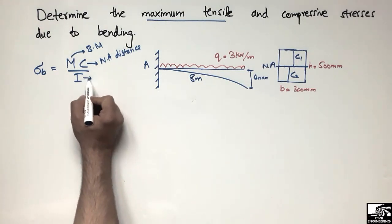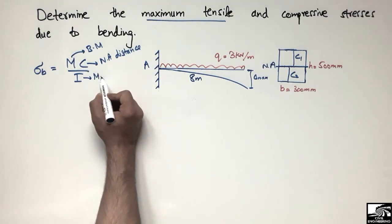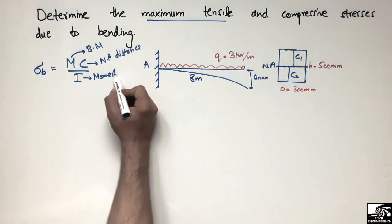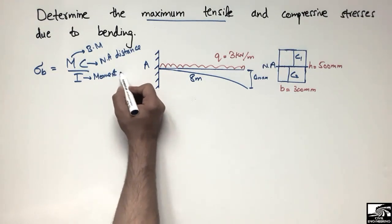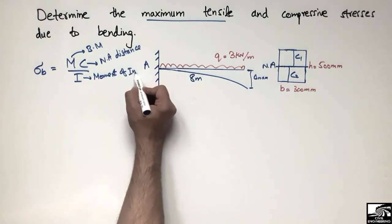I is called the moment of inertia of the beam. It depends upon the geometry of the object.